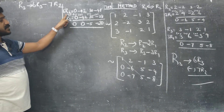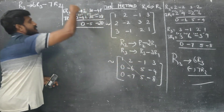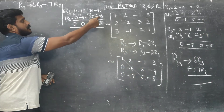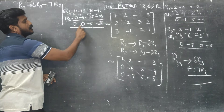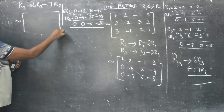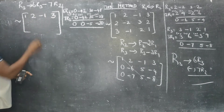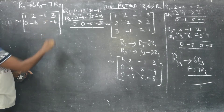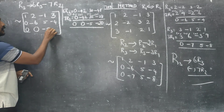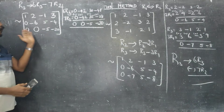To finalize, we compute: 6 times R3 gives 0, 42, 30, 48; and 7 times R2 gives 42, 35, 28. After subtracting, the result is 0, 0, minus 5, minus 20 — this is the new R3. The final matrix is: row 1: 1, 2, minus 1, 3; row 2: 0, minus 6, 5, minus 4; row 3: 0, 0, minus 5, minus 20. This is the row echelon form.